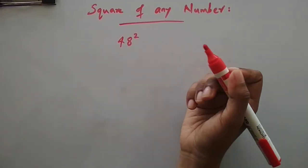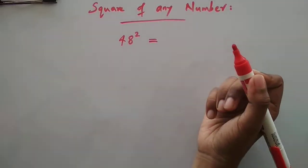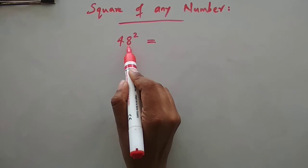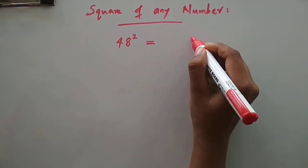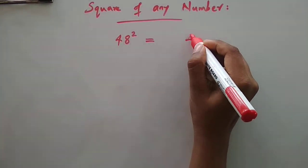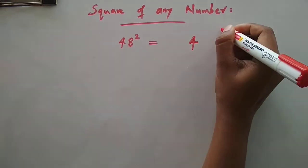So 48 square, what we have to do is first we should take the square of 8. What is 8 square? It is 64, so we will write 4 here and we will keep 6 aside.